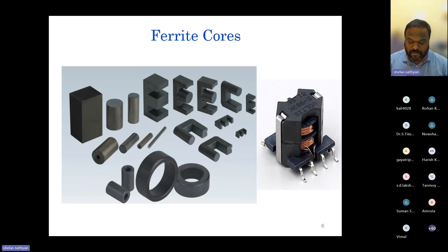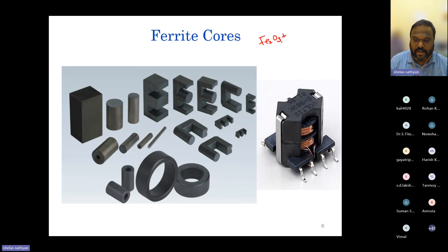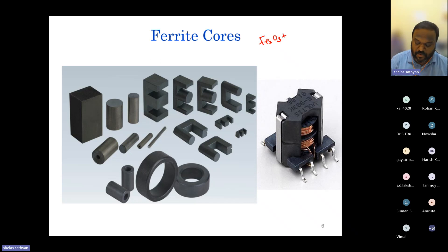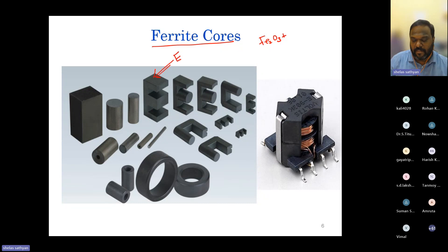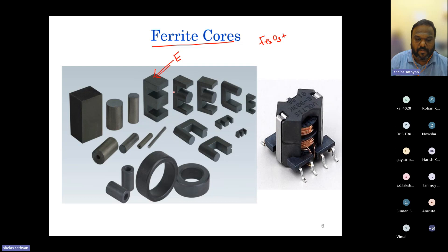Ferrite core is basically iron oxide mixed with manganese, nickel, or zinc oxide. The iron oxide powder and manganese or nickel oxide are mixed together and pre-cast into different shapes. That is why ferrite cores are available in different shapes. You may be familiar with the E-core: two E-cores form one complete set for a magnetic path. Ferrite cores are pre-cast modules.